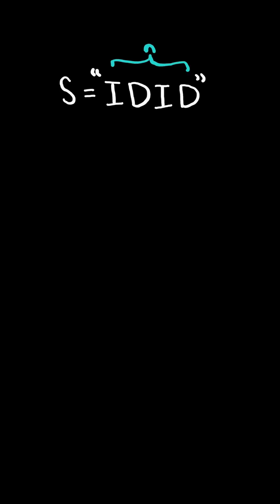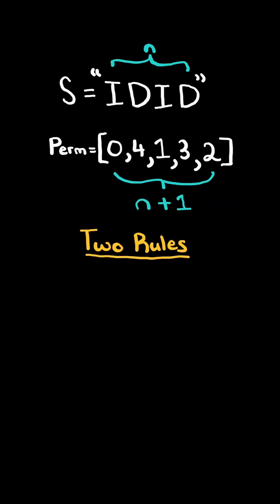DI string match. Given a string s of length n, we construct a permutation of length n plus 1, where we follow two rules.